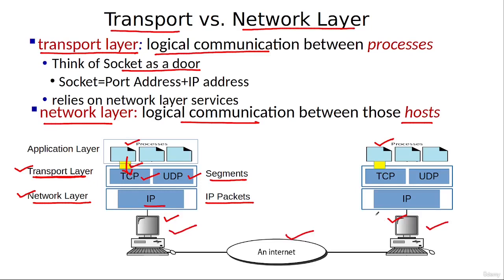Once these packets reach the destination host and reach the network layer of the destination host, the network layer removes its header from these packets and converts them back into segments. These segments are then given to the destination transport layer, which removes its header and converts them back to the messages. These messages are then given to the destination process through the destination socket.